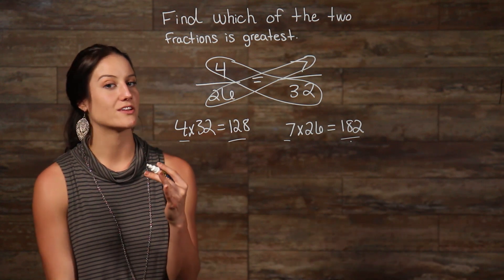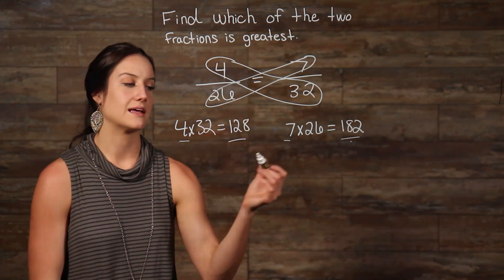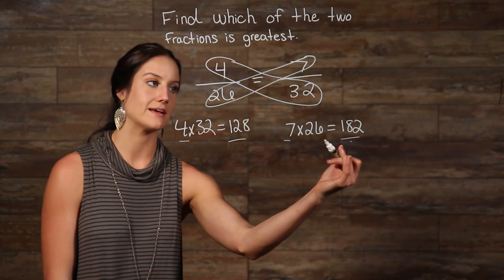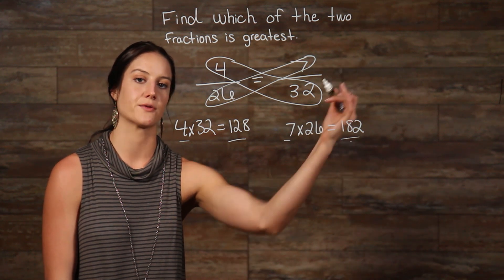128 goes on the left side to represent 4 over 26, and 7 times 26 is equal to 182 goes on the right side to represent this fraction right here.